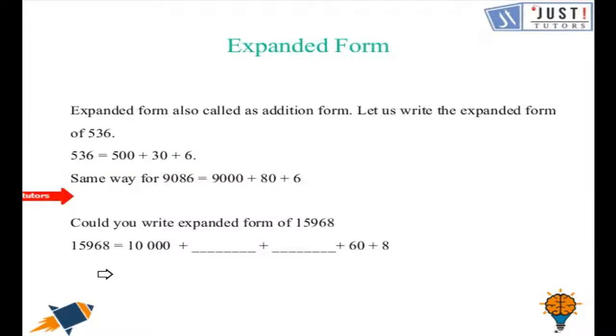Same way for 9086. 9000 add 80 add 6. As you can see as we have a 0 at the 100's column so we need not write 0 in the expanded form.